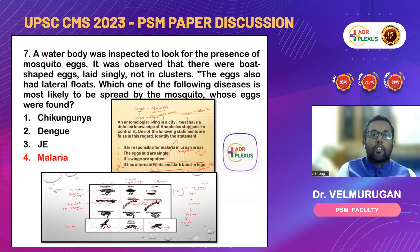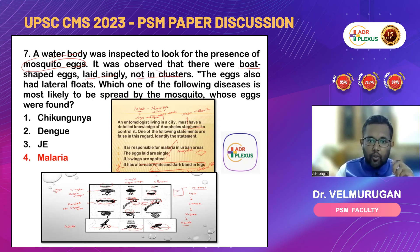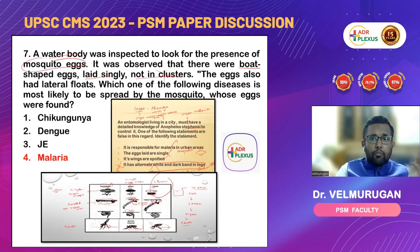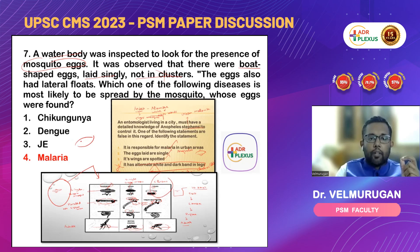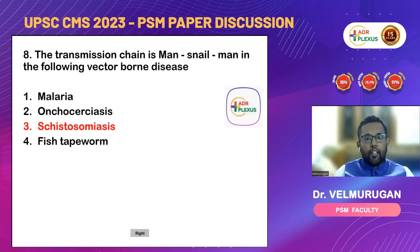Next question: a water body was inspected for the presence of Vortex Mosquito X. The mosquito eggs are boat-shaped and single, not in clusters. Clusters means Culex — C for C — so Culex is ruled out. It has to be either Anopheles or Aedes. But the eggs are boat-shaped with a latent float, which is only for Anopheles. So the answer is Anopheles, and Anopheles transmits malaria.